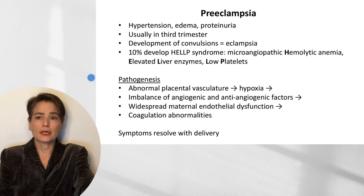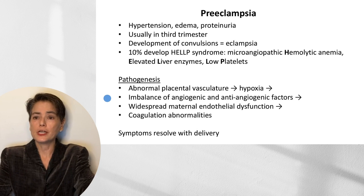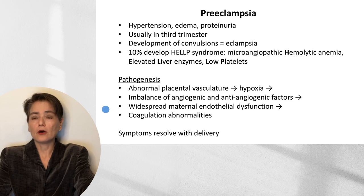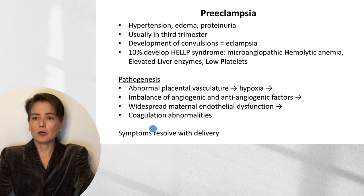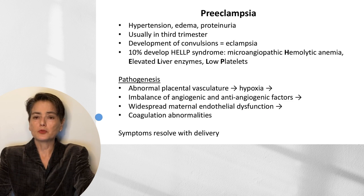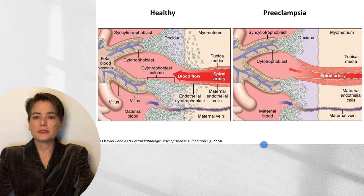The pathogenesis of preeclampsia, as already alluded to, is due to abnormal placental vasculature. This leads to hypoxia and an imbalance of angiogenic and anti-angiogenic factors, causing widespread maternal endothelial dysfunction. As discussed in an earlier video from chapter 3, we will get coagulation abnormalities in response to this endothelial dysfunction. These symptoms will typically resolve with delivery. Let's take a look at a figure from Robbins and Cotran, Pathologic Basis of Disease, to understand what is happening in the placenta.